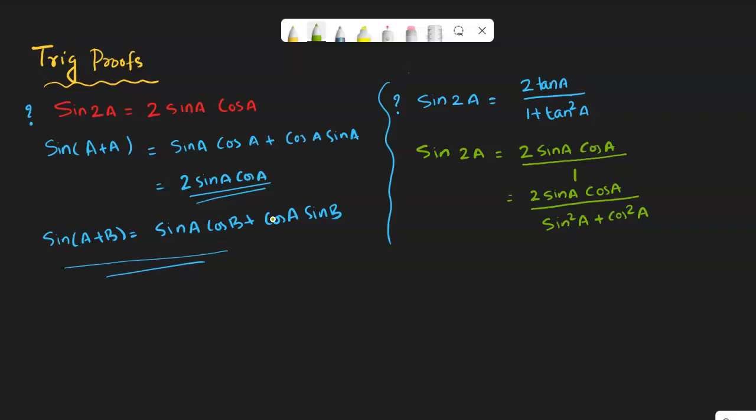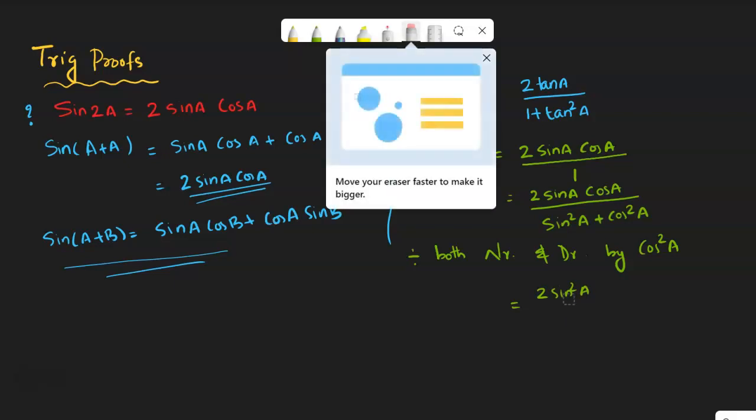Okay, so next in the next step I'm going to divide both numerator and denominator with cos square a. So divide both numerator and denominator by cos square a. So this will be 2 sin a cos a divided by cos square a.